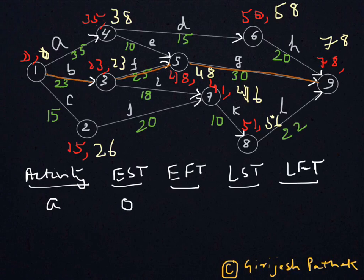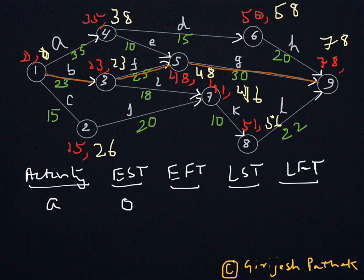Then the Earliest Finish Time: if you start the activity at time 0 and activity A requires 35 days, then 0 plus 35 means the earliest you can finish this activity is after 35 days. So the Earliest Finish Time for activity A is 35.